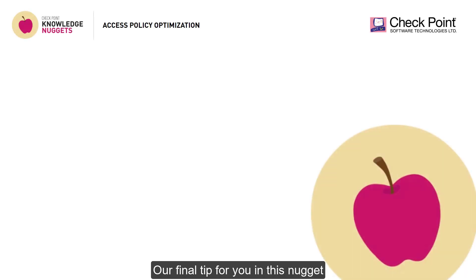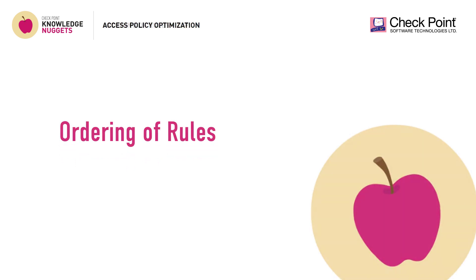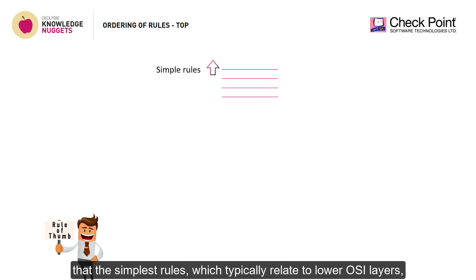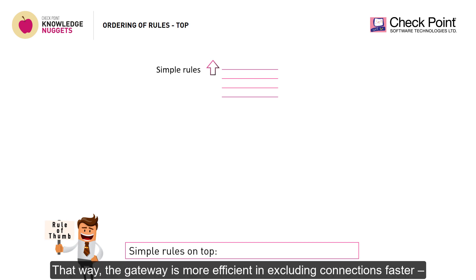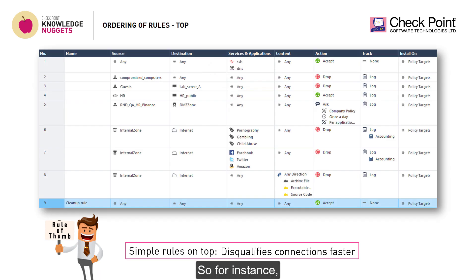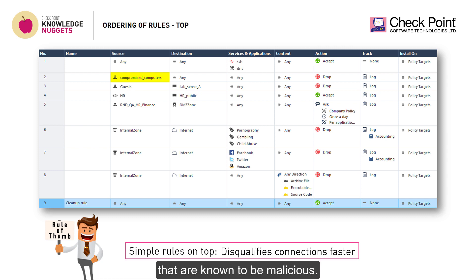Our final tip involves the order of your rules within the policy. The rule of thumb is that the simplest rules, which typically relate to lower OSI layers, should be placed as high as possible in the policy. That way, the gateway is more efficient in excluding connections faster, saving it the need to process the many other rules in the policy. For instance, in this example, we've blocked early on any connections from sources that are known to be malicious.